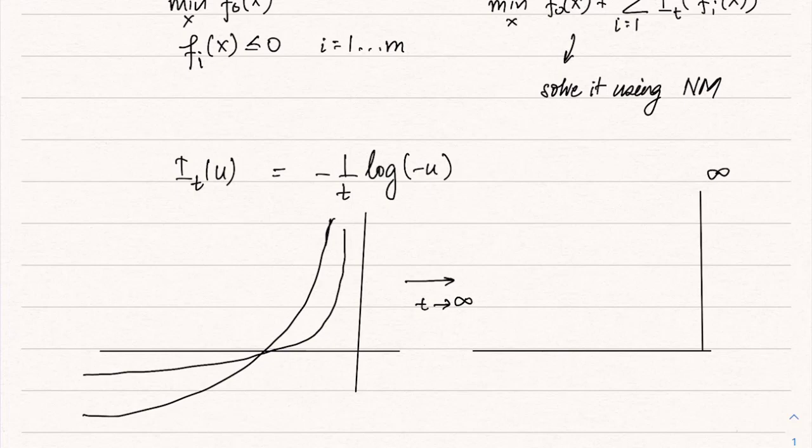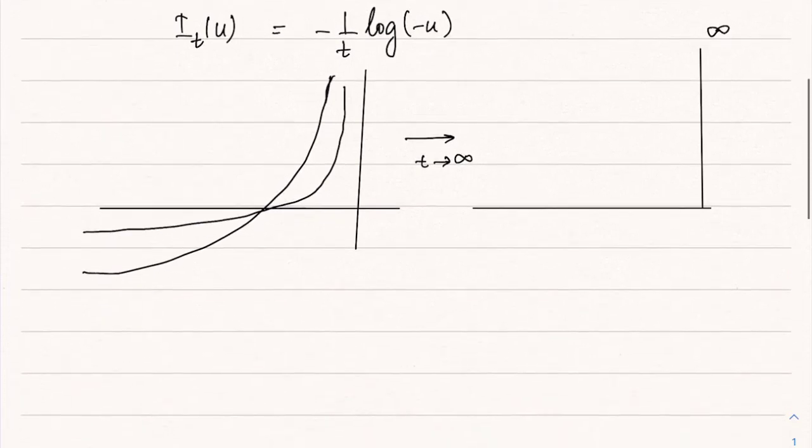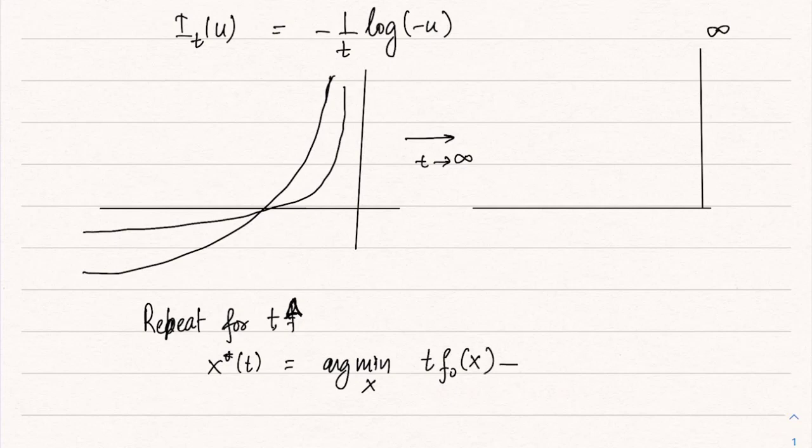This is the barrier function for various values of t. The interior point method requires us to repeat for t increasing, so we start from some small value of t and keep increasing it. At each step we solve this problem: x star t equals arg min over x...